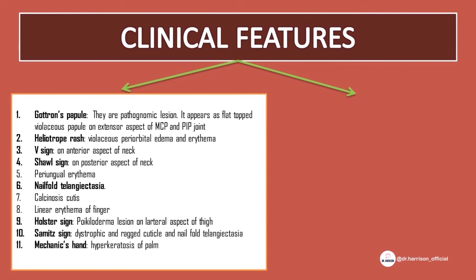3. V-sign — erythematous rash on the anterior aspect of the neck. 4. Shawl sign — erythematous rash on the posterior aspect of the neck. 5. Periungual erythema. 6. Nailfold telangiectasia. 7. Calcinosis cutis.